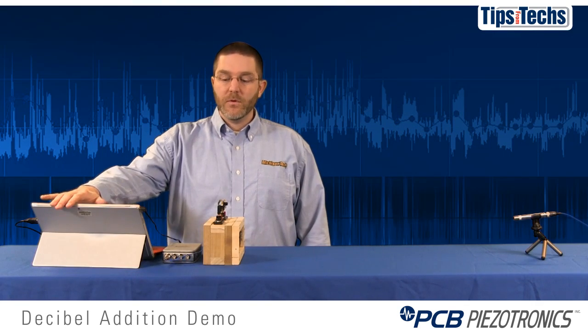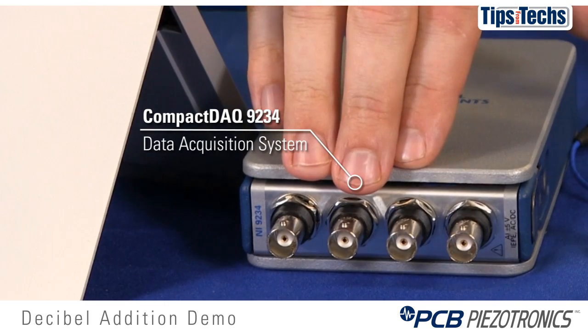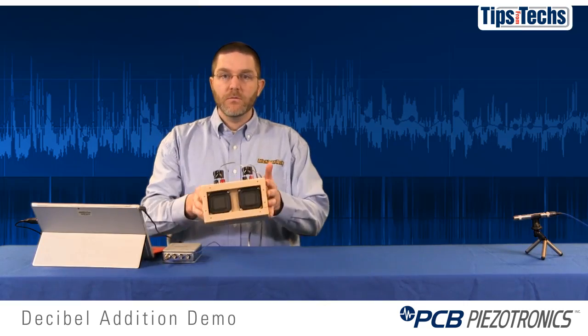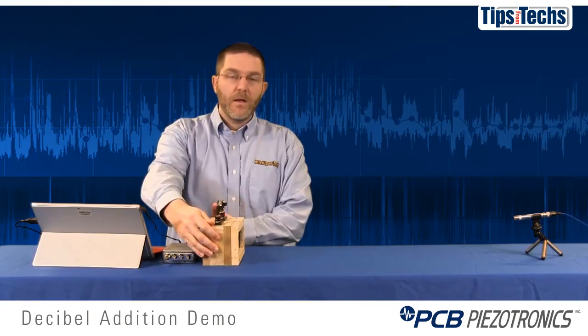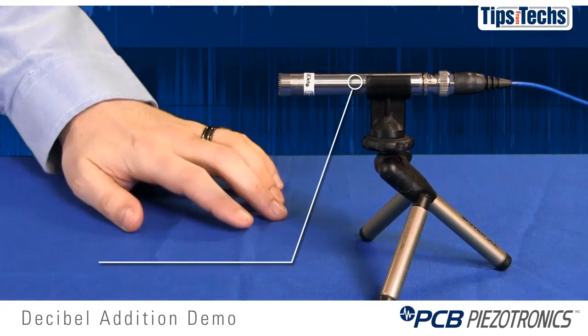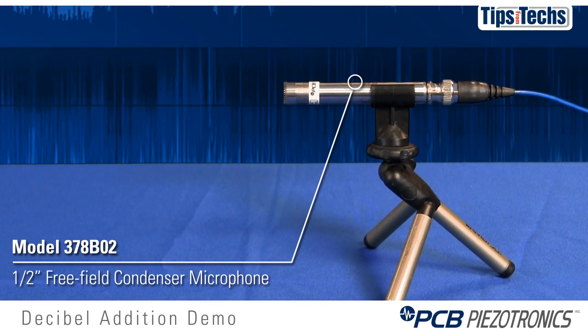Today we'll be using a laptop computer, compact DAC system with an 9234 card, a two-channel loudspeaker, and a PCB Piezo-tronics model 378B02 half-inch condenser microphone.